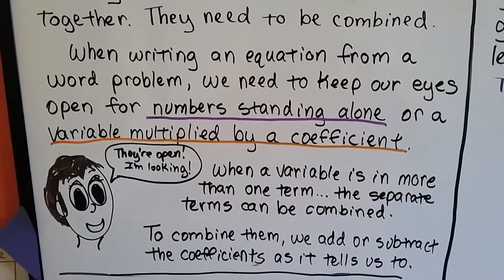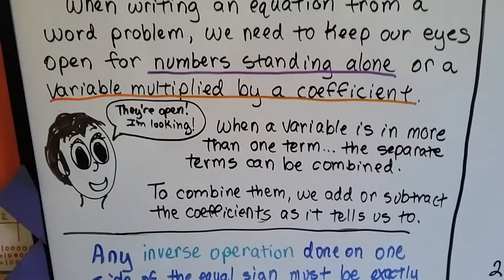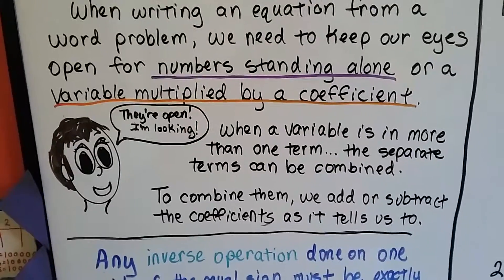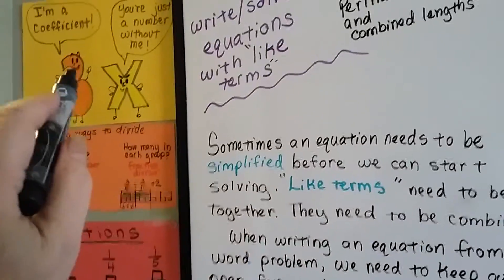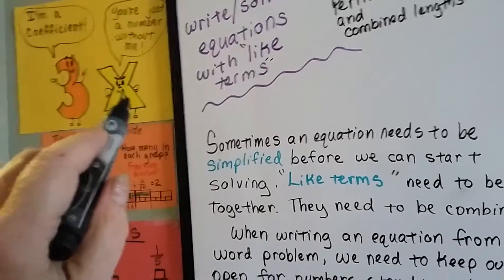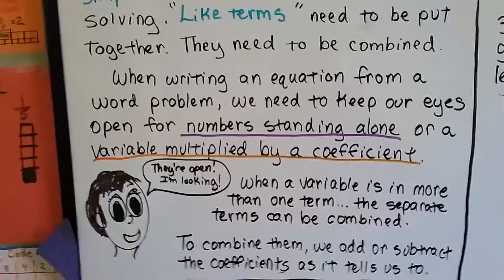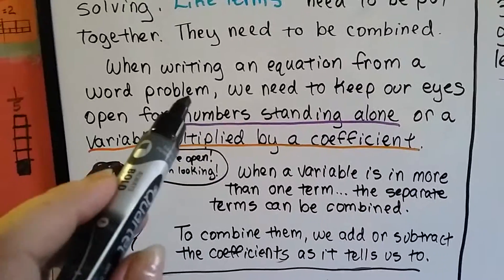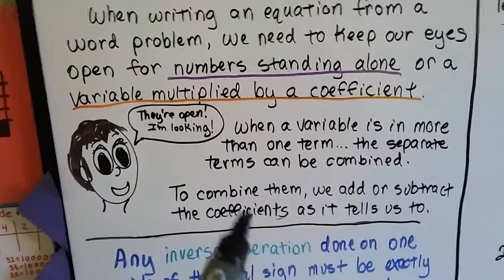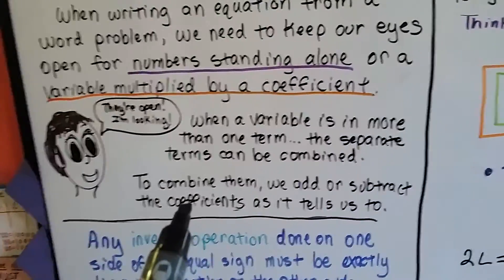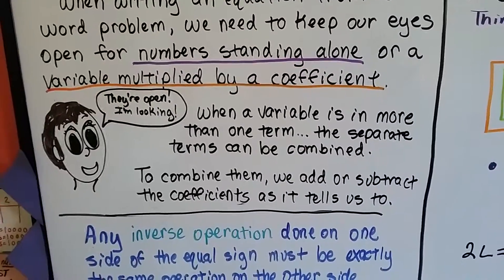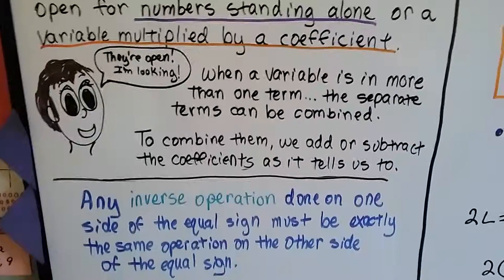When writing an equation from a word problem, we need to keep our eyes open for numbers standing alone or a variable multiplied by a coefficient. A coefficient is the number in front of a variable, and if the variable isn't there, then it's just a standalone number. When a variable is in more than one term, the separated terms can be combined by adding or subtracting the coefficients.